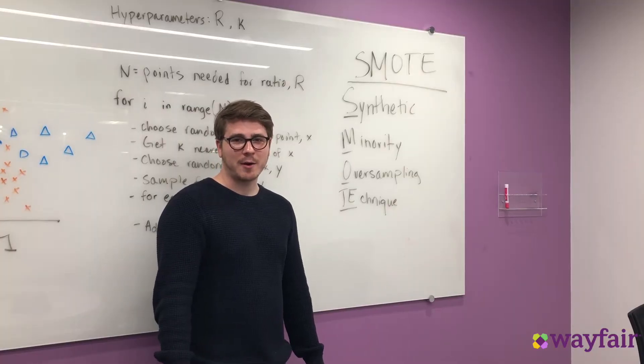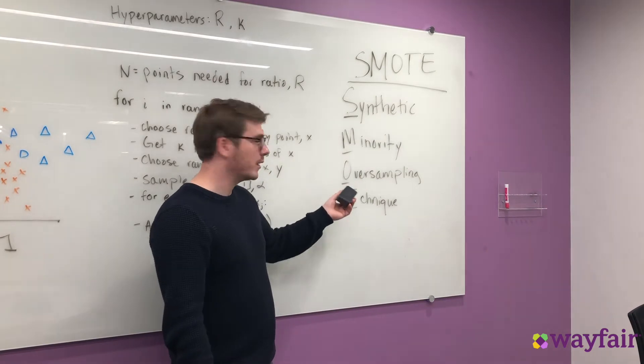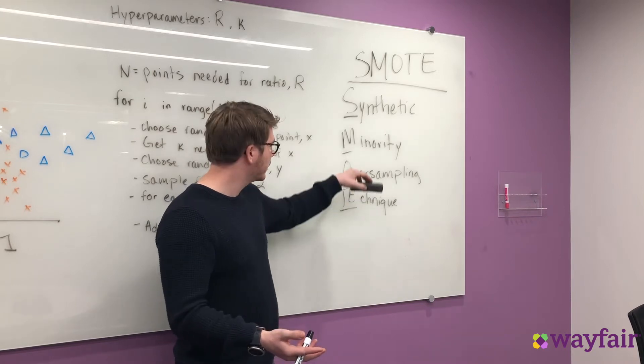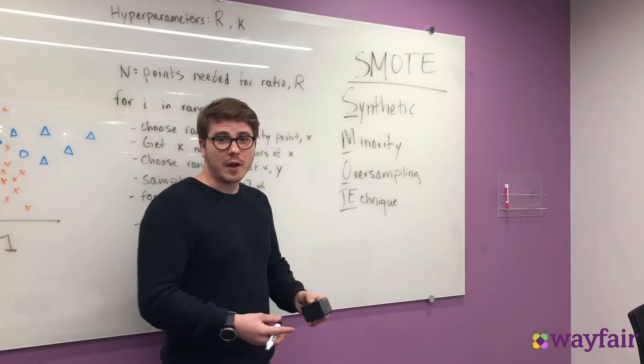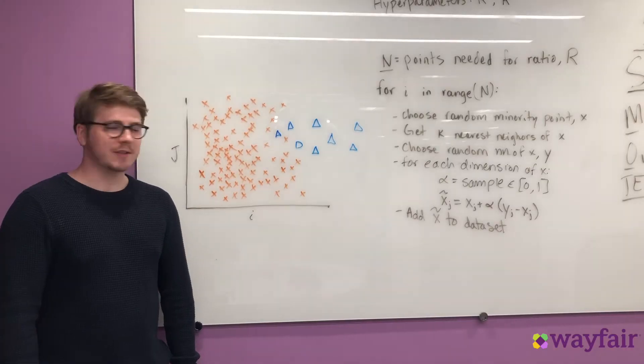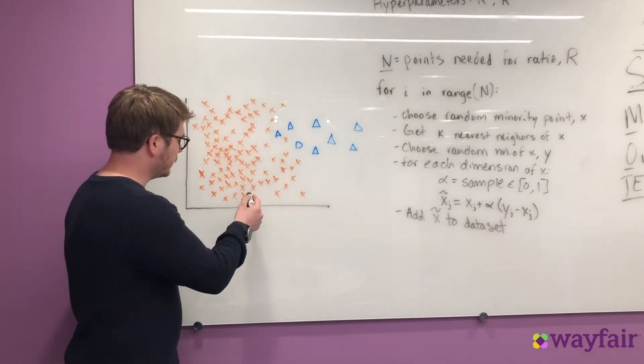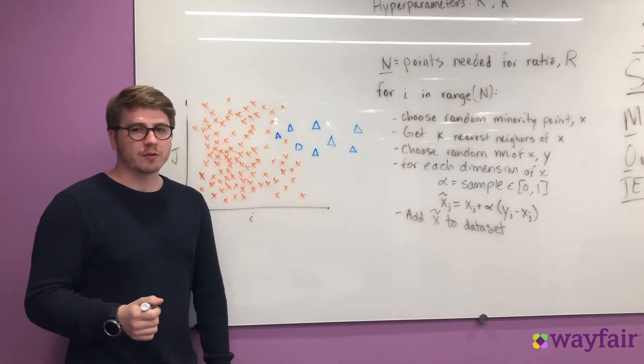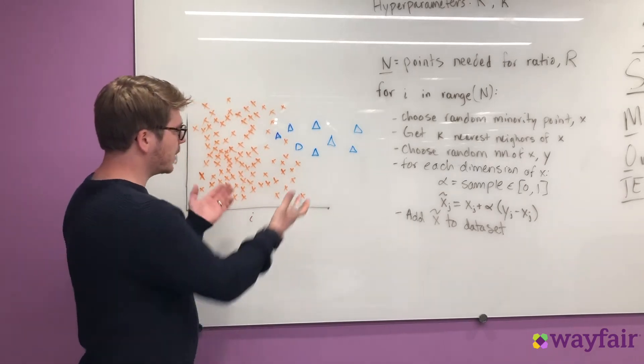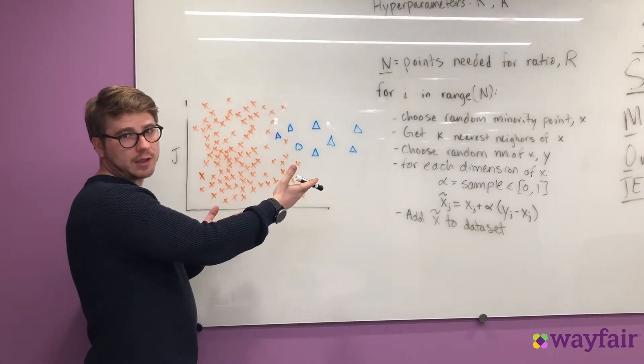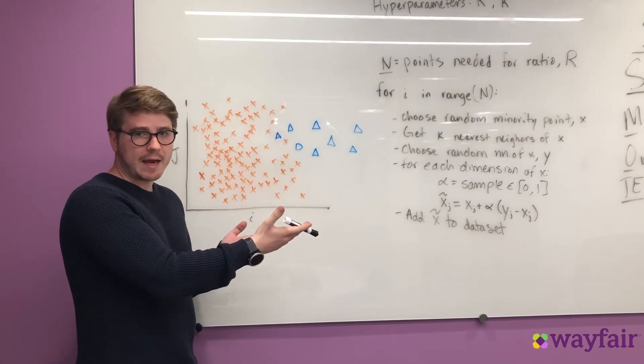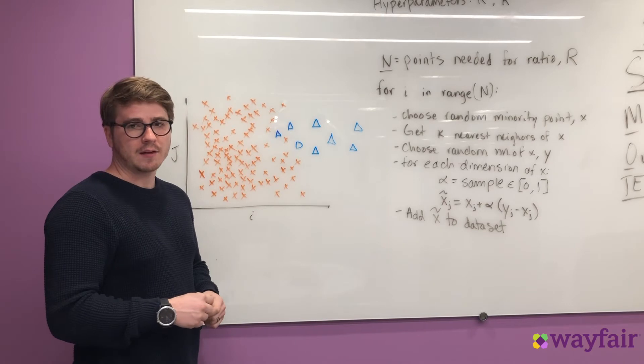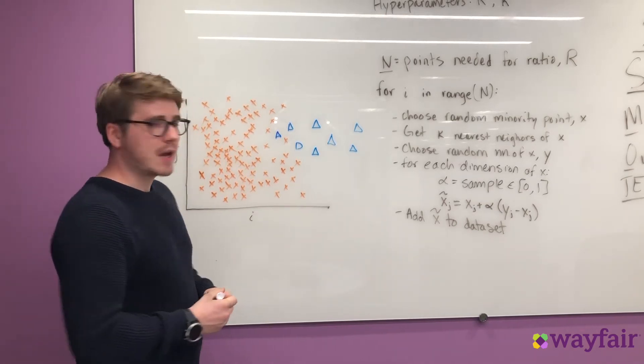The other oversampling technique we wanted to talk about was SMOTE. This stands for synthetic minority oversampling technique. And the reason it's synthetic is because we're creating synthetic points for the minority outcome. So let's talk a little bit about how this works. And here we have a data set that's highly imbalanced. We could say for example that the orange crosses represent non-fraudulent orders and these blue triangles represent fraudulent orders. Clearly we need to create multiple new synthetic fraudulent cases so that our model can effectively predict this.